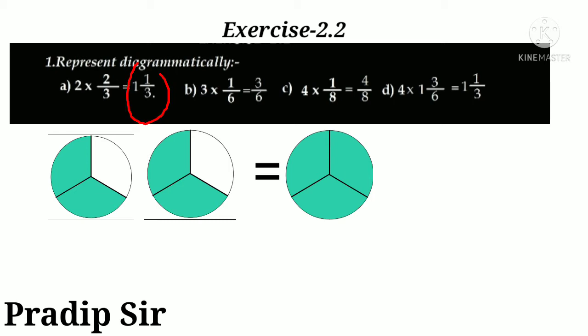After that, 1/3. That means a circle divided into three parts and one part is shaded. So we'll draw another circle like that. There you see, one part is shaded out of three parts. This way we can show the product of fractional numbers diagrammatically.